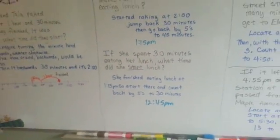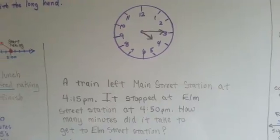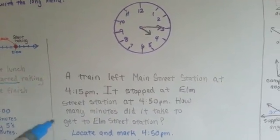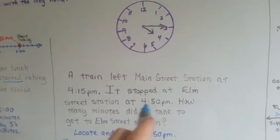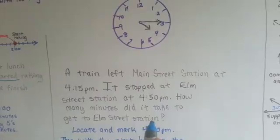So now let's go the other way. Let's go forward. A train left Main Street Station at 4:15 p.m. See? 4:15 p.m. It stopped at Elm Street Station at 4:50 p.m. How many minutes did it take to get to Elm Street Station?